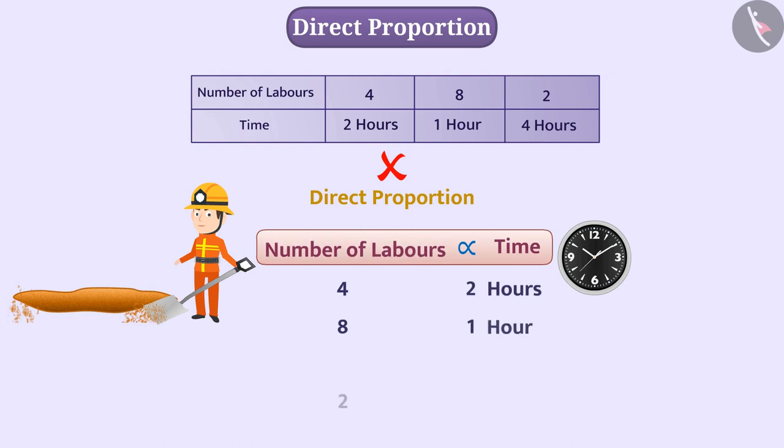But if the number of laborers decreases, then the time required will be more. In such a situation, there is no direct proportionality. Instead, there is inverse proportion. We will understand this in a separate video.